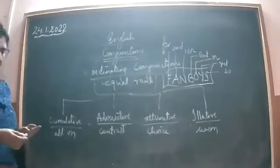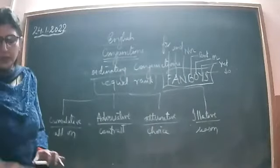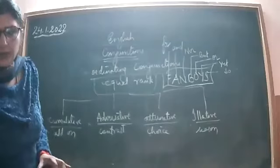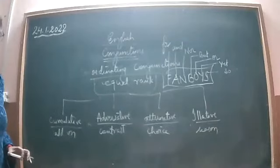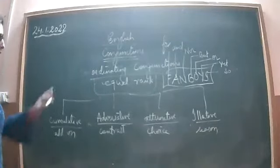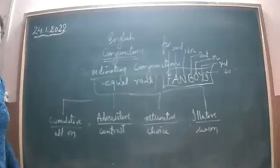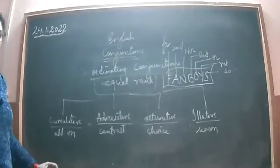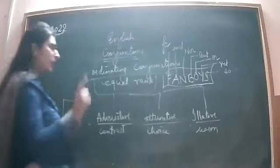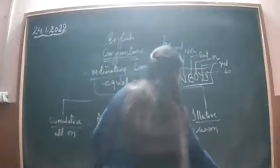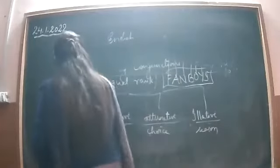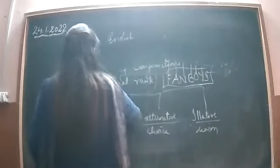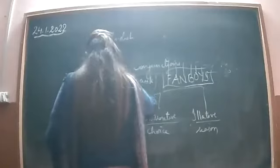These are called FANBOYS conjunctions, and they are all examples of coordinating conjunctions. After doing coordinating conjunctions, we move on to subordinating conjunctions.